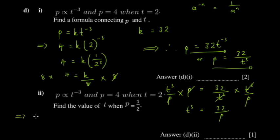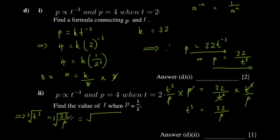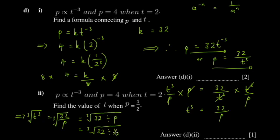So we have t cubed = 32 over p. To get t, we take the cube root of both sides. When you have a fraction inside a cube root and want to avoid creating a complex nested fraction, write it as the cube root of 32 divided by p. Substituting p = one half, this becomes 32 divided by one half inside the cube root.